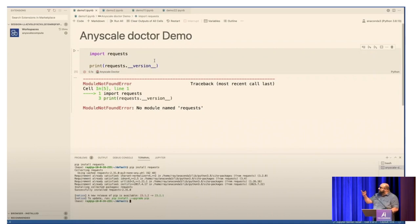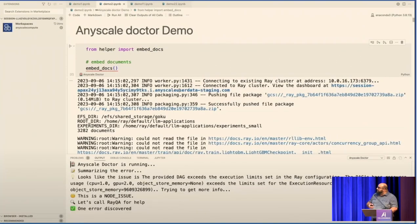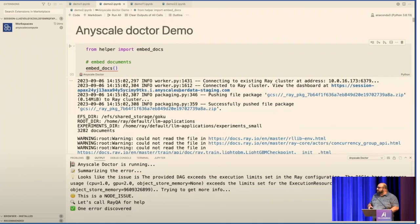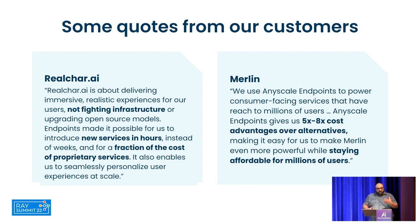A simple example: you forgot to install or import 'requests.' You click on the AnyScale Doctor button, and it says, 'You forgot to import requests — why don't you click this button and I'll pip install it for you.' Here's a more complicated example with a thousand lines of debugging code that's crashed. AnyScale Doctor diagnosed it and worked out the cause was because you didn't ask for GPUs when you should have. We also have users of AnyScale Endpoints or the AnyScale AI platform — companies like RealChar, a virtual character company, and Merlin, a summarization Chrome plugin that summarizes the web page you're on.